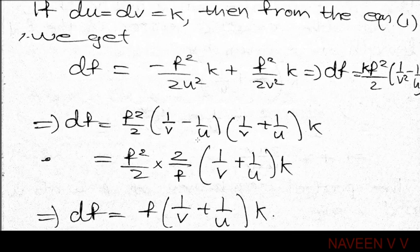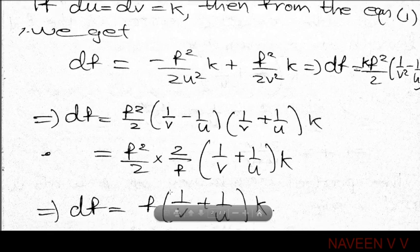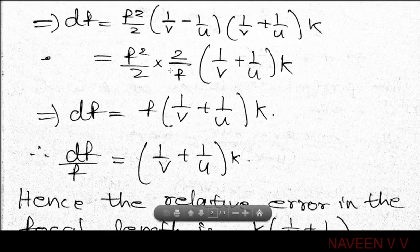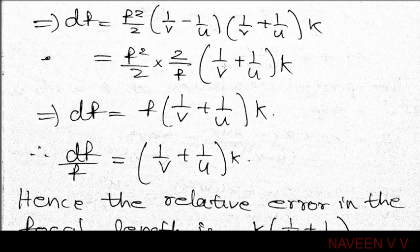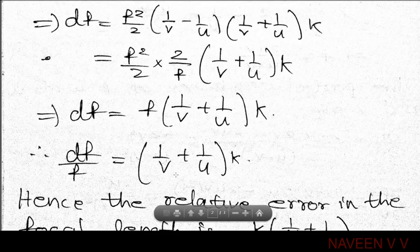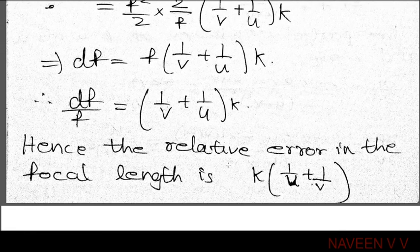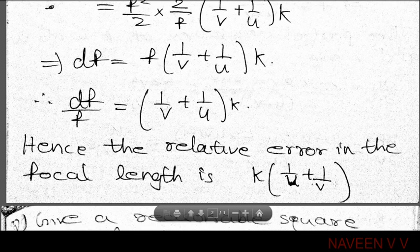Now, (1/v minus 1/u) = 2/f from the original formula. Substituting: df = (f²/2)(2/f)(1/v + 1/u)k, which gives df = f(1/v + 1/u)k. Therefore df/f = k(1/v + 1/u), which is the relative error. This is what we set out to prove.